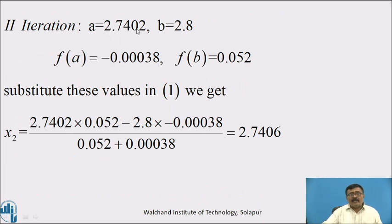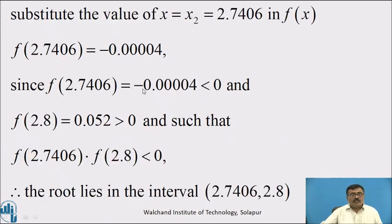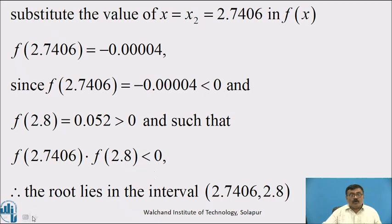Second iteration: a = 2.7402, b = 2.8, f(a) = −0.00038, f(b) = 0.052. Substituting in equation 1 and simplifying, we get x₂ = 2.7406. Substituting x = 2.7406 in f(x), f(2.7406) = −0.0004. Since f(2.7406)·f(2.8) < 0, the root lies in the interval (2.7406, 2.8).